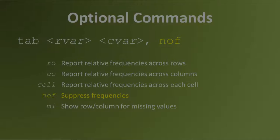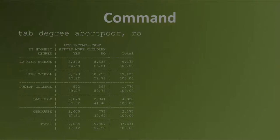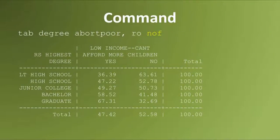The option nof asks Stata to suppress frequencies. This is useful for making tables more readable when all you care about are percentages. This is an example of a table that reports frequencies across rows without the frequency count. When we suppress frequencies, there's less information in the table, it's easier to read, and it focuses on percentages, which might be the only thing we care about.